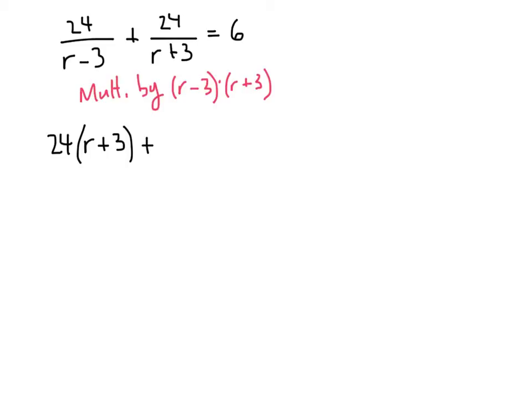And then on the right-hand side of the equation, there's nothing to divide out, so we just get 6 times r minus 3 times r plus 3.